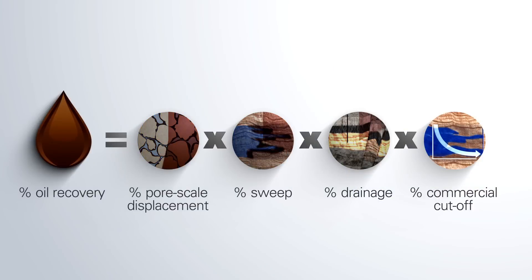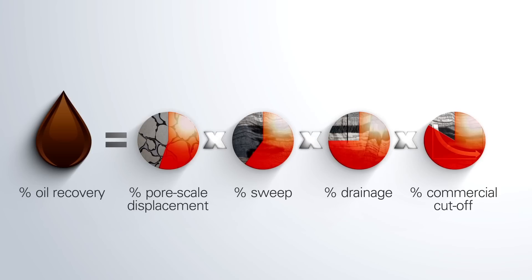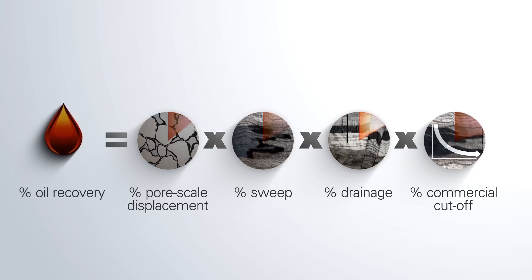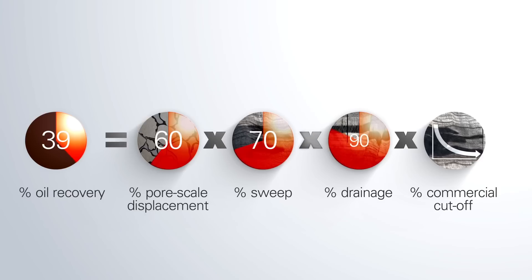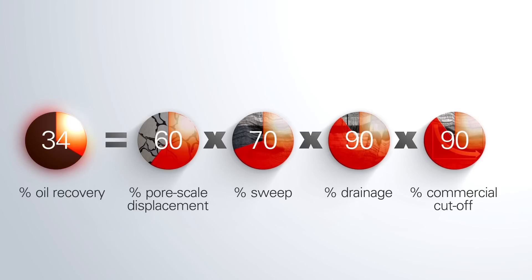So when four fractions of less than one are multiplied together, the resulting number for overall average oil recovery becomes very small. For example, 60% pore scale displacement times 70% sweep times 90% drainage times 90% cutoff equals 34% total reservoir oil production.